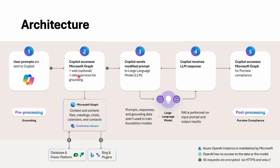This can happen with the help of different services. If it is Office 365, Copilot can reach out through Microsoft Graph. The request will be forwarded via Microsoft Graph to applications like your files, meetings, chat, or any other related application. As you can see, this information is within your tenant. This can also be extended to external sources like databases, Power Platform, Bing, or other plugins, so Copilot will try to fetch information from those external places as well.